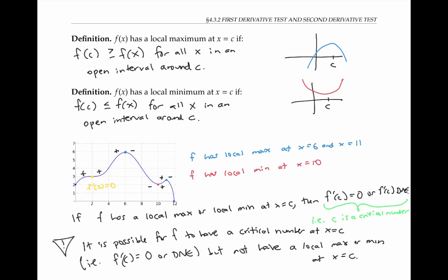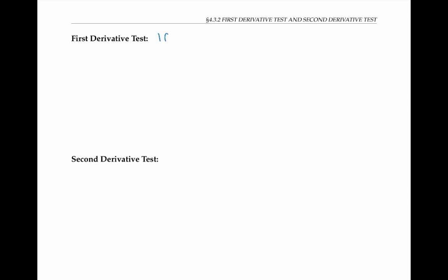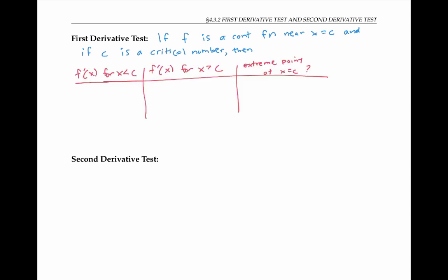These observations help motivate the first derivative test for finding local maximums and minimums. The first derivative test says that if f is a continuous function near x equals C, and if C is a critical number, then we can decide if f has a local maximum or minimum at x equals C by looking at the first derivative near x equals C. More specifically, if f prime of x is positive for x less than C and negative for x greater than C, then our function looks something like this near x equals C, and so we have a local max at x equals C.